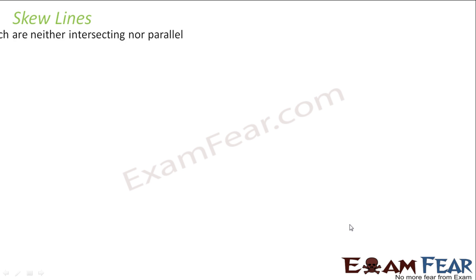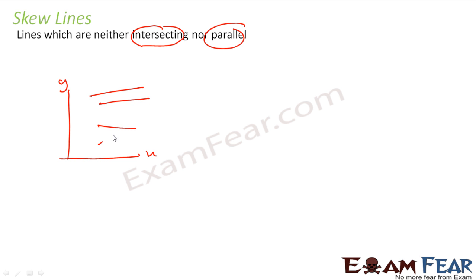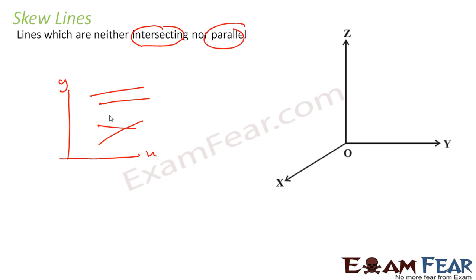What are skew lines? Skew lines are lines which are neither parallel nor intersect. In 2-dimensional, lines are either always parallel or they are intersecting. You cannot have a line which is neither parallel nor intersecting, because we are talking only about 2-dimensional.